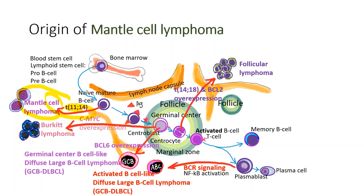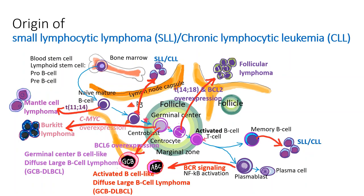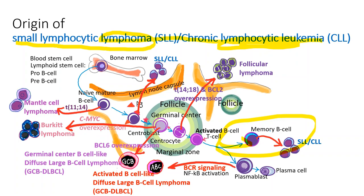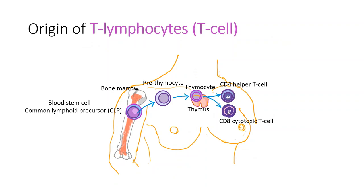Mantle cell lymphoma is also an aggressive lymphoma. They have a translocation of 11 and 14, and they originate from naive mature B cells. The small lymphocytic lymphoma and CLL are basically the same disease — their relationship is like ice and water. They originate from memory B cells or antigen-exposed naive B cells.